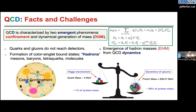We have the formation of color singlet bound states, whether they are mesons or baryons or other things which do not have color. Then we have the emergence of hadron masses from QCD dynamics. The Higgs mechanism is responsible for giving the quarks their masses — we talk about up and down quarks more because these are the ones we are basically made of. Protons and neutrons are made of up and down quarks, so these get masses through the Higgs mechanism, which is of the order of a few MeV.